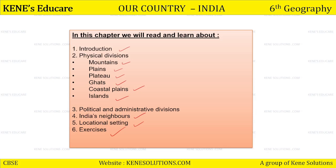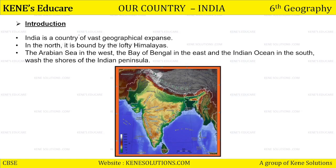So let's get started with the chapter. Starting with the introduction. Hum ne bola ki hum is chapter mein apni country India ke baare mein padhengi, and majorly we will be reading about the geographical features of the country. India is a country of vast geographical expanse. Hamaari jo geography hai, woh bohut hi expanded hai — keval mountains ya rivers par seemit nahi hai. We have mountains, hills, greenery, plain areas, plateau, various types of soils, various types of ghats, and oceans near us.